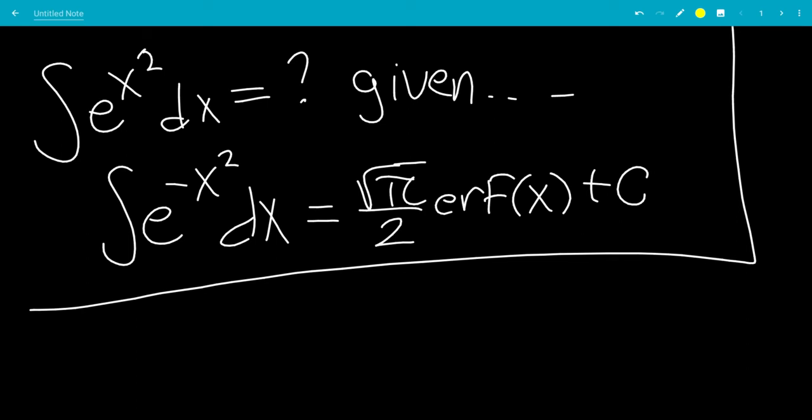In this video, we'll do the integral of e to the x squared, given that the integral of e to the minus x squared equals the square root of pi over 2 times the error function of x plus c.